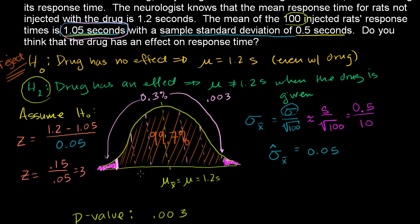This is called a two-tailed test because a super high response time, if you had a response time that was more than three standard deviations, that would have also made us likely to reject the null hypothesis. So we were dealing with both tails.